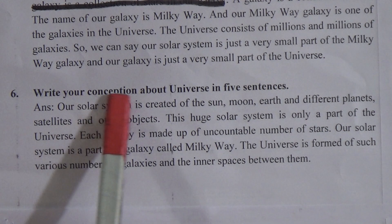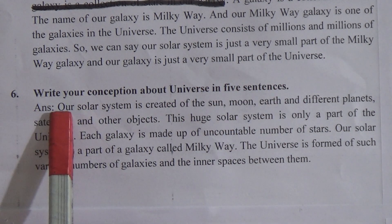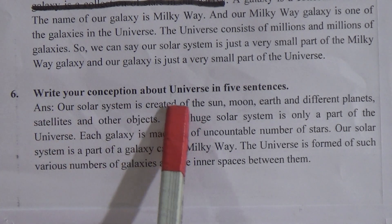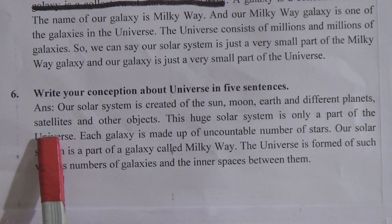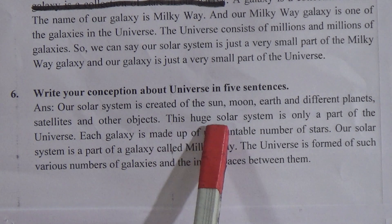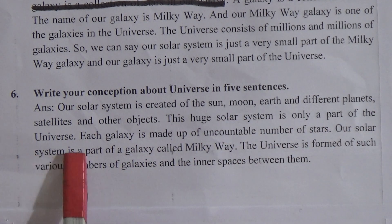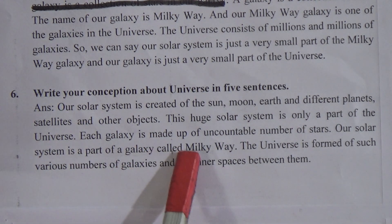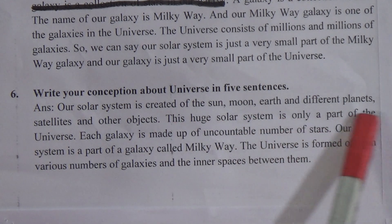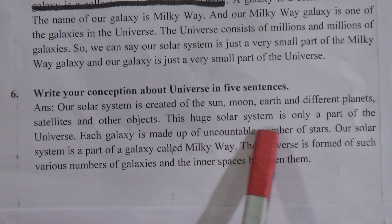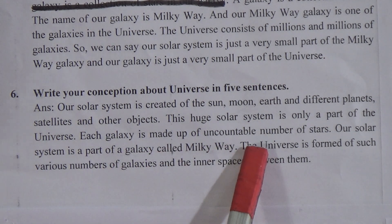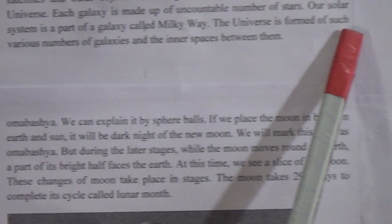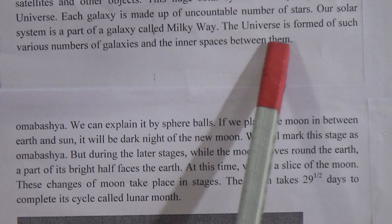Come to the next question: write your conception about the universe in five sentences. Our solar system consists of the sun, moon, the earth, and different planets, satellites, and other objects. This huge solar system is only a part of the universe. Each galaxy is made up of an uncountable number of stars. Our solar system is a part of the galaxy called Milky Way. The universe is formed of various numbers of galaxies and the inner space between them.